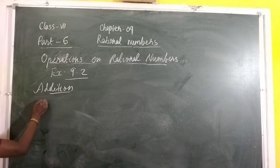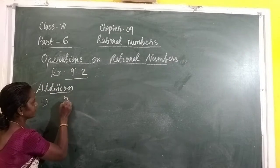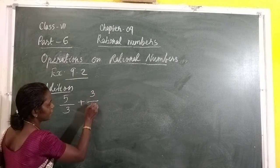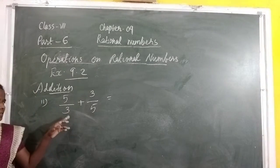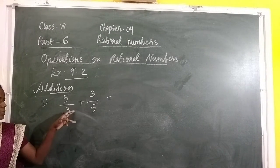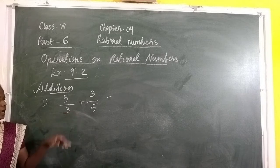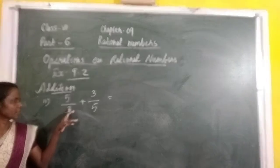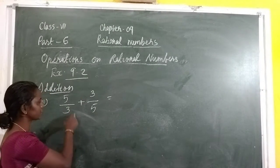Second question: 5/3 plus 3/5. Find out the sum. Here, the denominators are different. So we find out the LCM, or we can use another method: cross-multiplication.